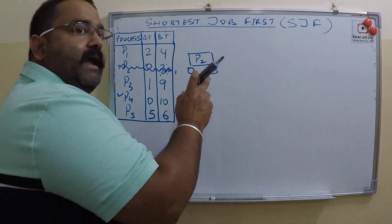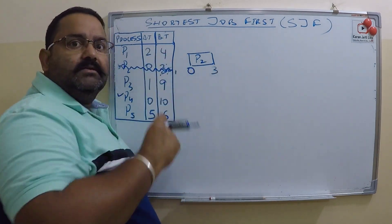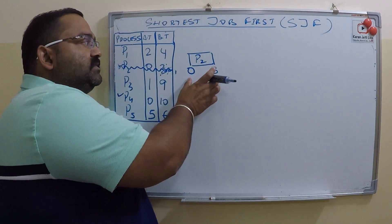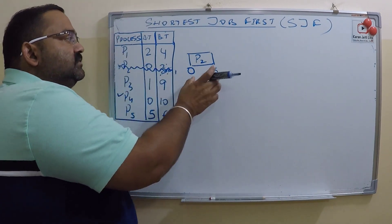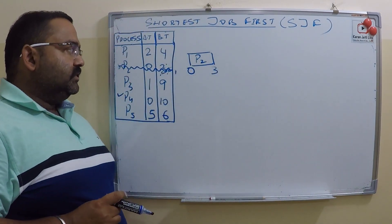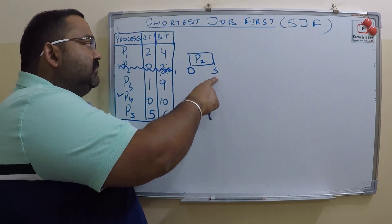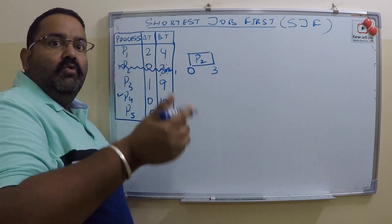P2 will start at zero and it will finish at three. Now P2 is complete. At time three, how many processes we have remaining who are waiting for their turn?